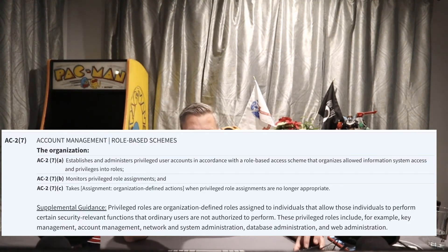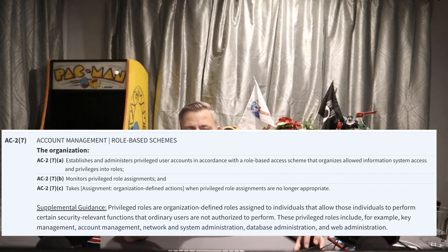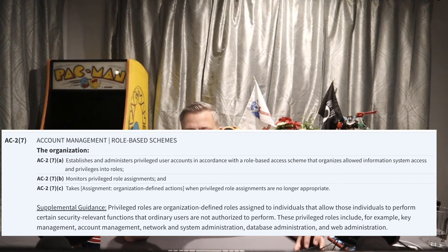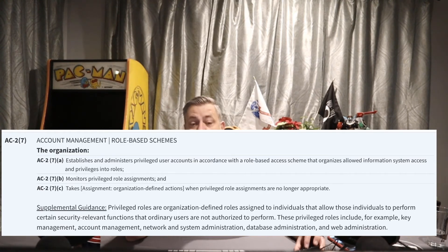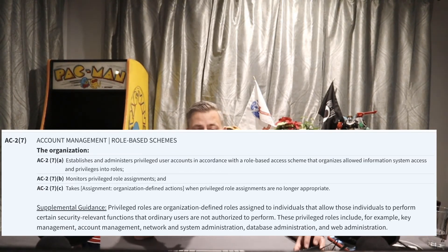AC2 Enhancement 7 — role-based schemes: the organization establishes and administers privileged accounts in accordance with role-based access schemes that organize allowed system access and privilege into roles. We put privilege into roles, put people into those roles, monitor the privileged role assignments, and take an organizationally defined action — often removing the account or role — when the privileged role assignments are no longer appropriate.